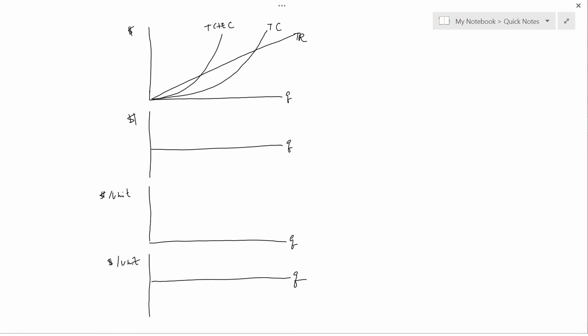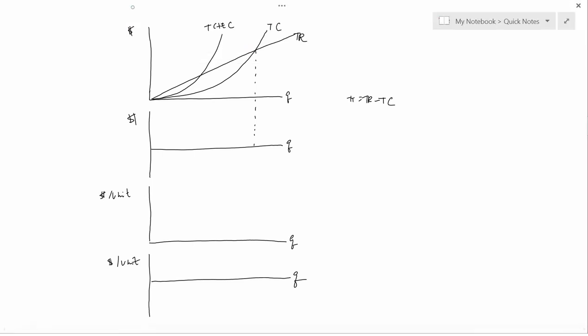Given the external cost function from the last video, I want to graph profit in the second graph. Profit of course is total revenue minus total cost. The easiest places to graph profit are where total revenue equals total cost — that is, where the total revenue line intersects the total cost line — because those are places where profit is going to be zero. So profit is zero here, and also zero at the origin.